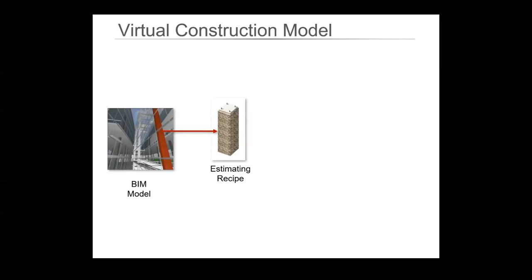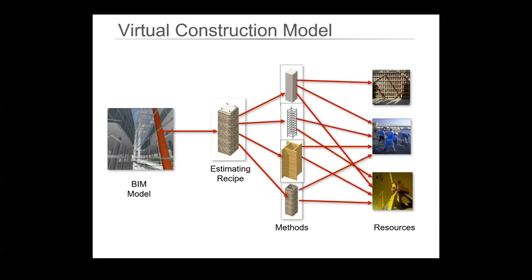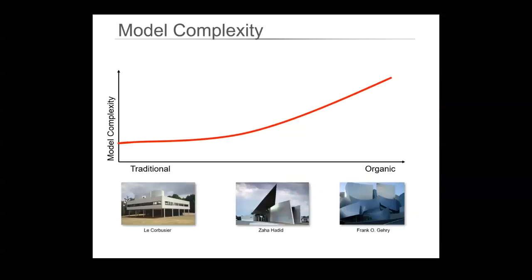Here's our virtual construction model. We've basically modeled up a column, but in a BIM model it's more than just a column with nothing in it — it's built up of a recipe of sorts to make it a usable element. In this instance, the column has a concrete core with steel reinforcing, then the formwork, and then the facing material over the top. They're all different components of that one column, and in a proper BIM model we would have the details of it and be able to pull all that out of the BIM model. That all goes to the resources required on site.